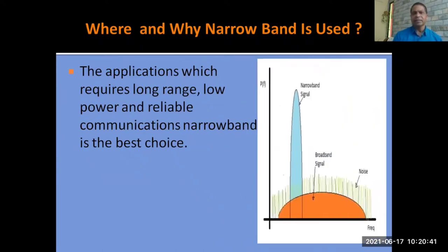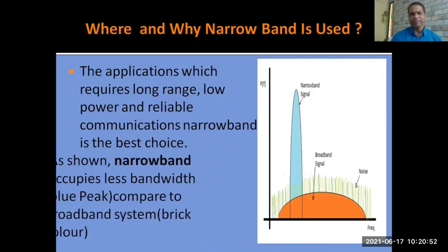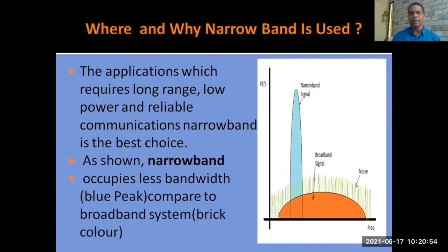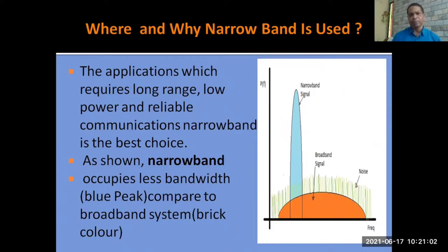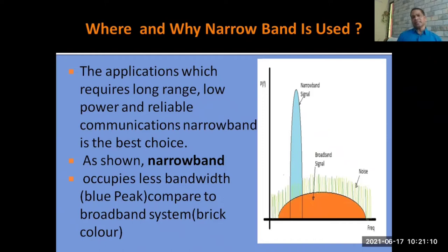This figure compares narrowband and broadband signals. The graph plots frequency against power transmission. Narrowband occupies less bandwidth, as shown by the blue color peak, compared to the broadband system which occupies more bandwidth. Noise is also greater in the broadband signal because the broadband signal and noise have a larger interactive area.